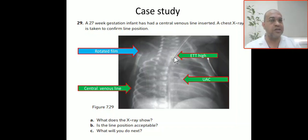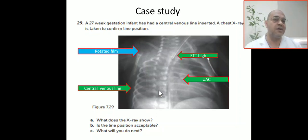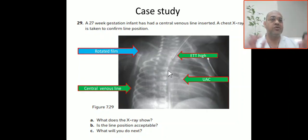So the film is rotated and the ATT is slightly high. Regarding the central venous line, it comes from the right side, then goes down. In the lateral aspect of the chest there is another line close to the vertebral column, which most probably is the UVC. That is the comment about the X-ray.